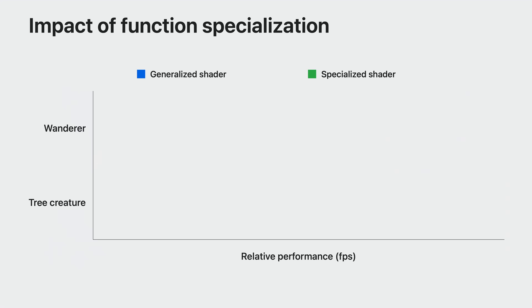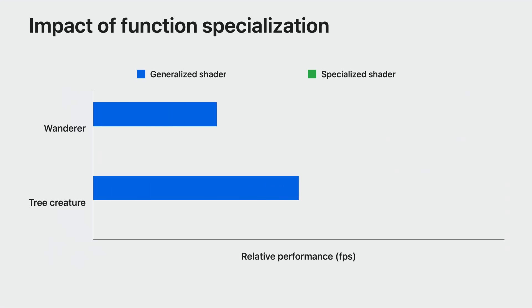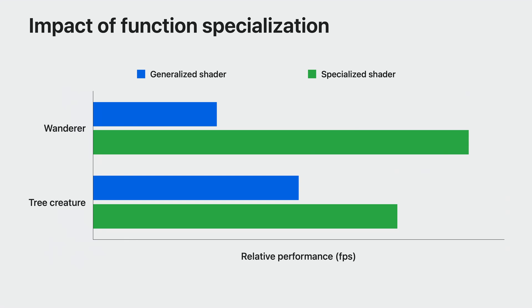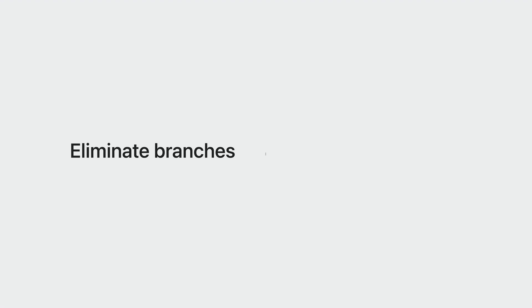This is a comparison of real-time performance data from two common test assets in Blender 3D: Wanderer and TreeCreature. First is the baseline performance in frames per second of the scenes using an uber shader. Second is the specialized shader approach with function constants, which performs much much faster. In order to make the fastest specialized shader variant, use function constants to disable unused features and eliminate branching.